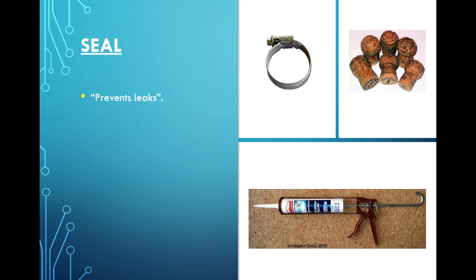Then we have the function of seal. So we're trying to prevent a liquid or a gas from escaping the system or entering a system sometimes. So here we have the cork, so we're going to seal a bottle so the liquid inside doesn't come out. If we do some plumbing, we might use some special glue or we might use some pieces like these